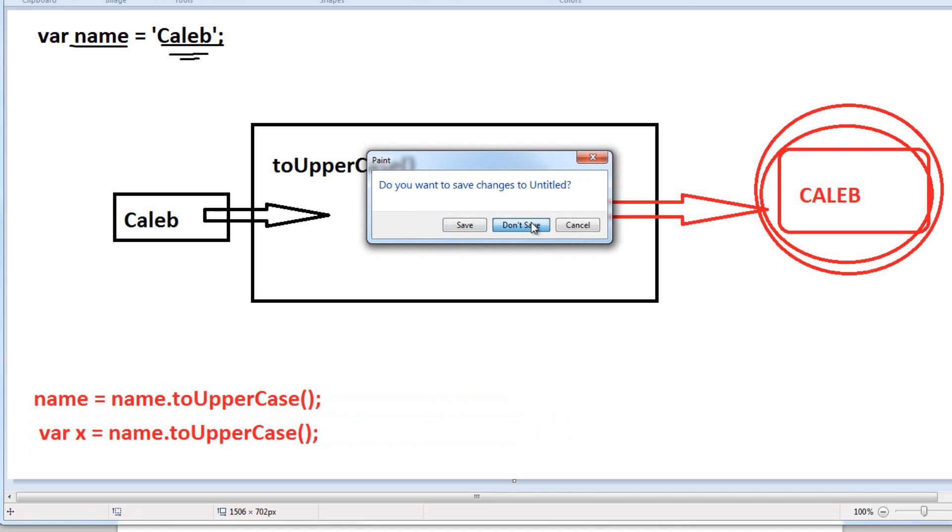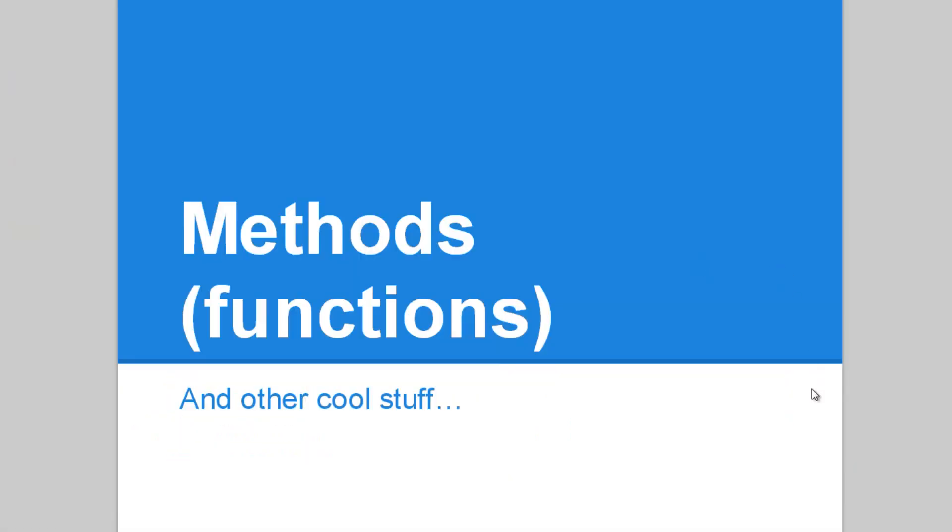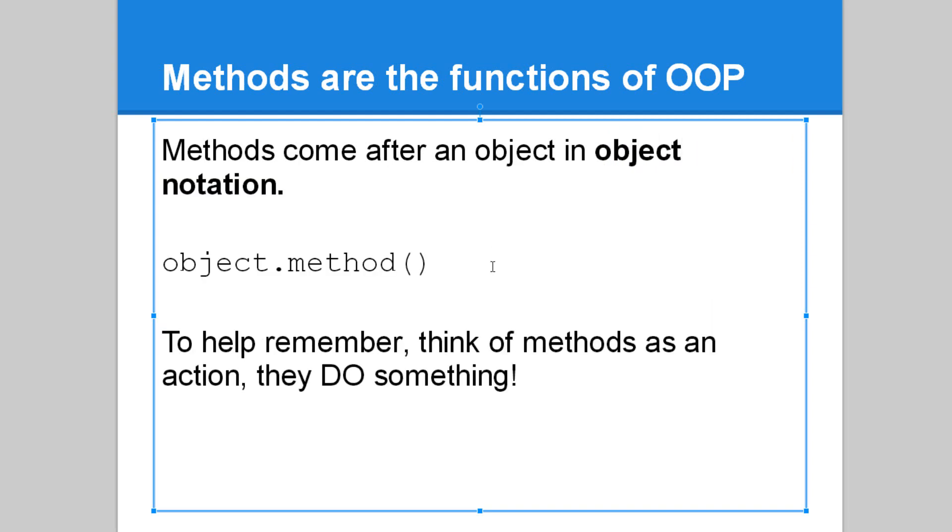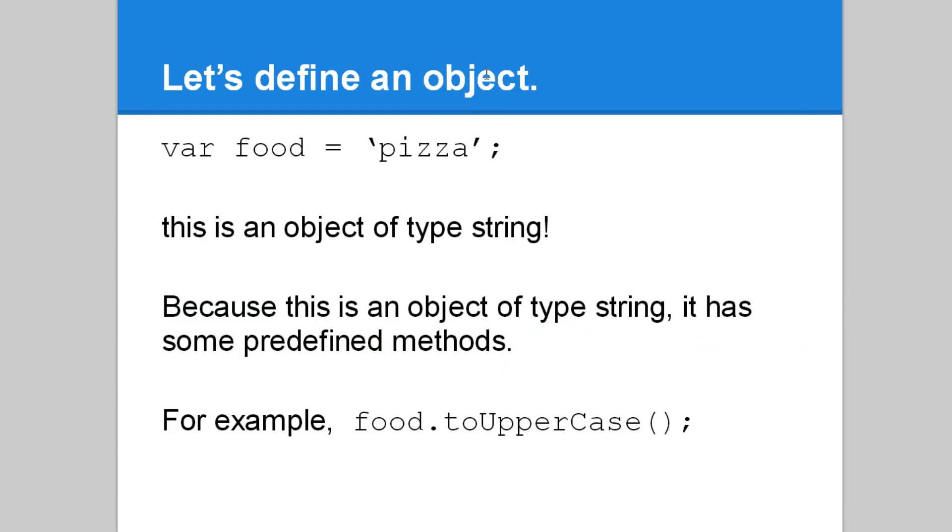Now that we just wasted like three and a half minutes, we can finally look at the PowerPoint. So a lot of this is going to be repeating myself, but that's okay. Methods are functions of object-oriented programming. JavaScript is an object-oriented programming language. Everything, essentially everything we make in JavaScript is an object. So methods come after an object using what's known as dot notation or object notation.